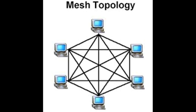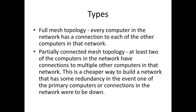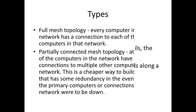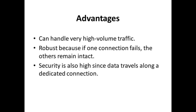This is how a mesh topology looks like. There are two types of mesh topology: full topology and partially connected mesh topology. Full topology is where every computer in the network has a connection to each other, whereas partially connected mesh topology means at least two of the computers in the network have connections to multiple other computers in the network.